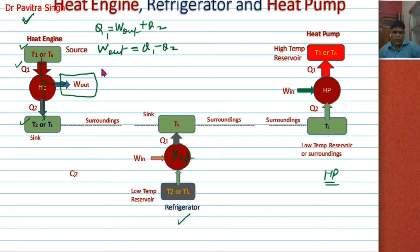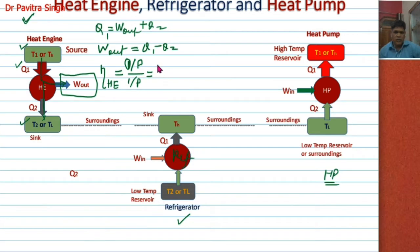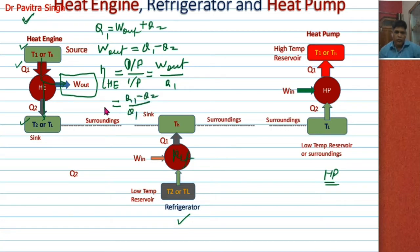Now we will find the efficiency of this heat engine. Efficiency of heat engine is equal to output upon input. Here output is W_output and input is heat supplied Q1. So efficiency equals W_output upon Q1, which equals Q1 minus Q2 upon Q1. This is the efficiency of this heat engine.